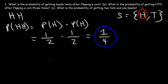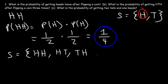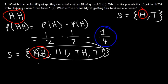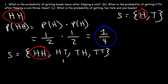Now to confirm this answer, let's write out the sample space for flipping two coins. We can get heads and then heads, or heads then tails, or tails then heads, or two tails. Notice that we have one desired event out of a potential of four events. So that's why the probability is one out of four — only one outcome out of four leads to the successful outcome we want.